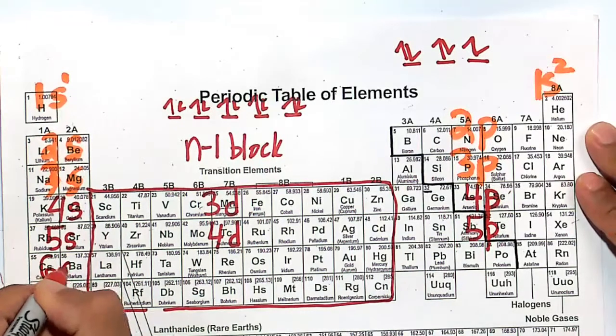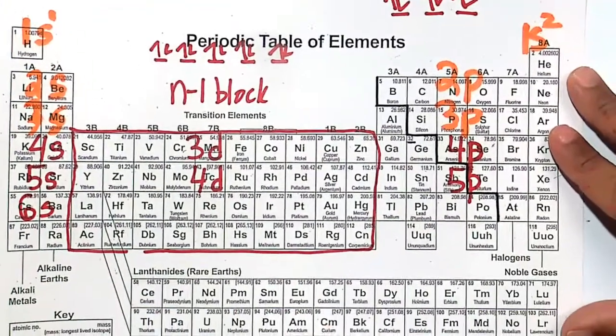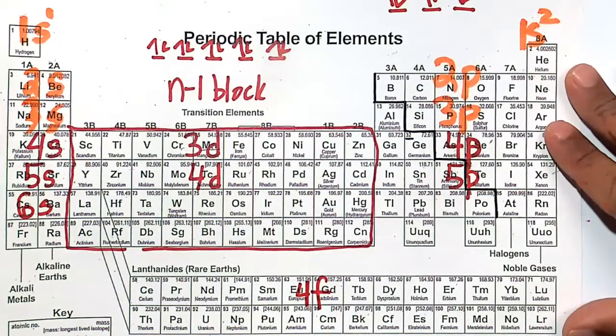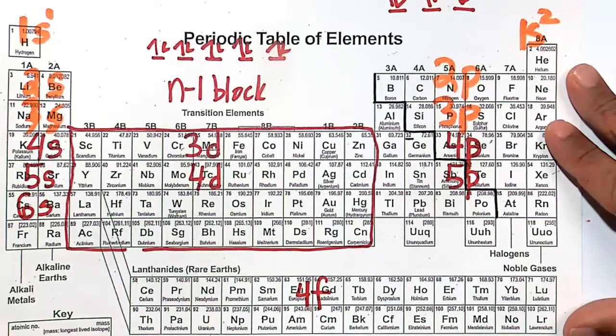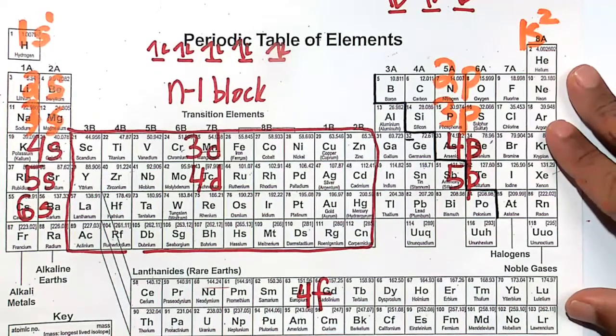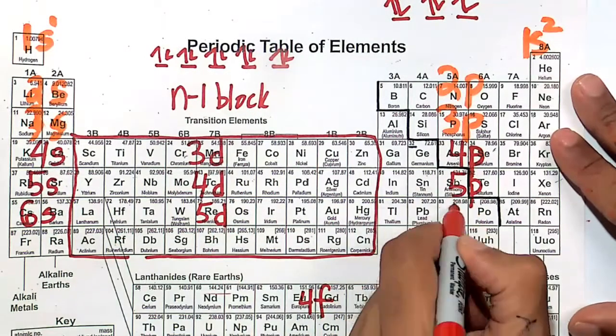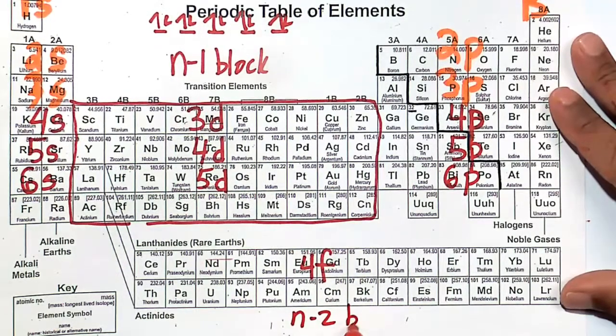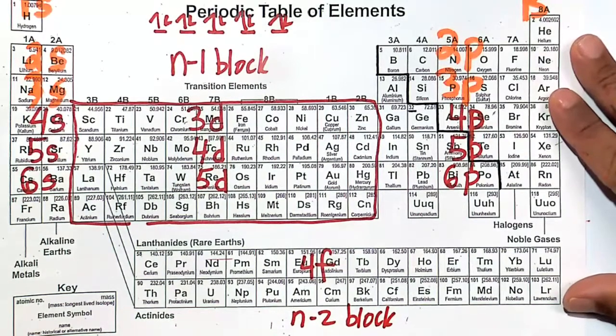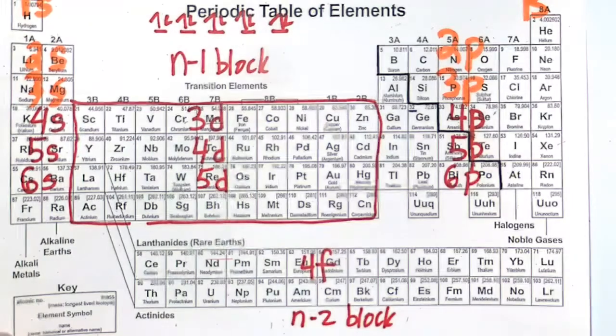After 5p, we go to 6s. After 6s, we actually take a little bit of a detour. After 6s, we take a detour and fill out the 4f region. f has 7 slots to fill up 14 electrons. These are the lanthanides and actinides, the rare earth elements. So we fill up 58 to 71, and then after that, from 4f we go to 5d, and then from 5d we go to 6p. The lanthanides and actinides are called the n-2 block. While the transition metals are the n-1 block, the lanthanides and actinides are the n-2 block. You take your n, subtract 2, just like you did for the transition metals.